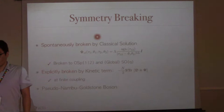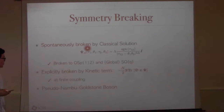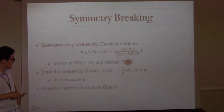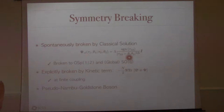The emergent symmetry — super reparametrization and local SO(Q) — is not an exact symmetry. It is explicitly broken by the kinetic term (which we ignored) and spontaneously broken by the classical solution. If you transform the classical solution under reparametrization, it is not invariant; it is only invariant under OSP(1|2). So our emergent symmetry is broken down to OSP(1|2) and global SO(Q). Because of this symmetry breaking, there will be Goldstone modes, and I will discuss the effective action of these light modes.